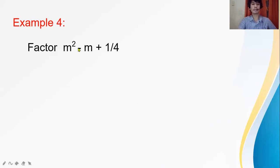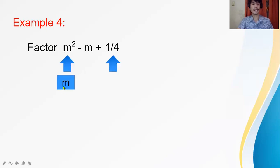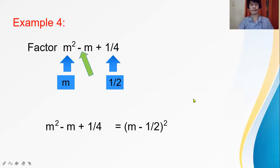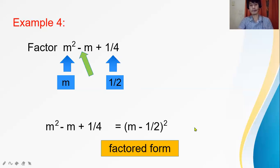Next: factor m squared minus m plus one-fourth. The first and last terms, m squared and one-fourth, are perfect squares. The square root of m squared is m, and the square root of one-fourth is one-half. The middle term is negative, so copy the negative sign. Square the binomial. Therefore, the factored form is (m minus one-half) squared.